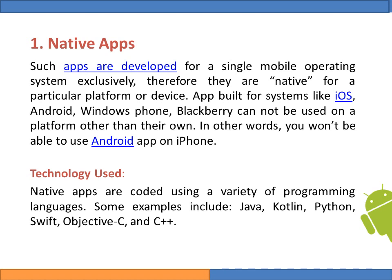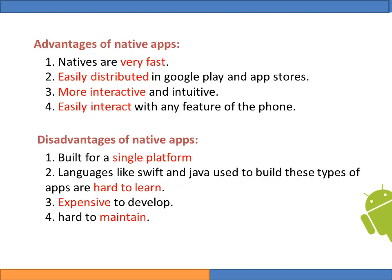Native applications are coded using a variety of programming languages. Some examples include Java, Kotlin, Python, Swift, Objective-C, and C++. The advantages of native applications are: first, they are very fast; second, easily distributed in Google Play and App Stores; third, more interactive and intuitive; and fourth, they easily interact with any features of the phone.